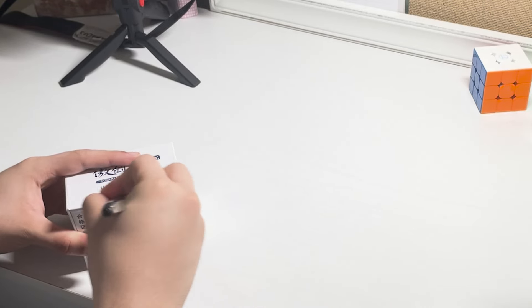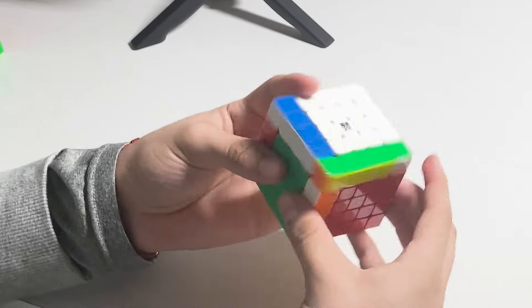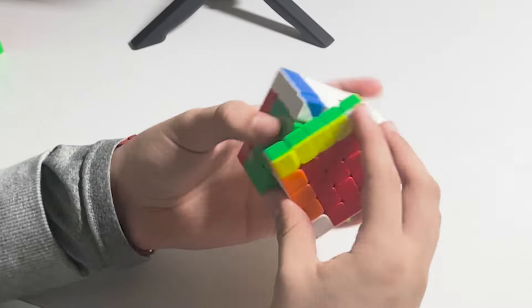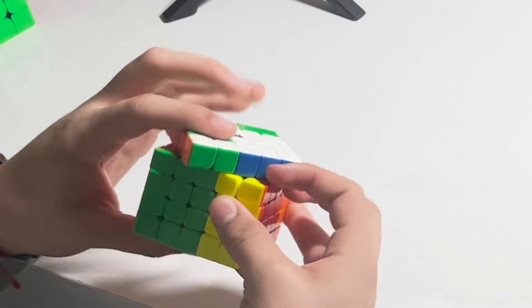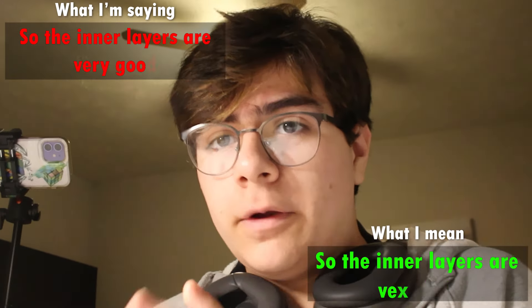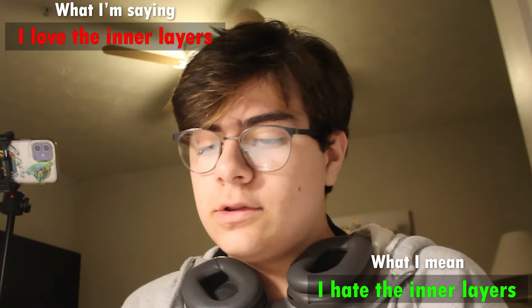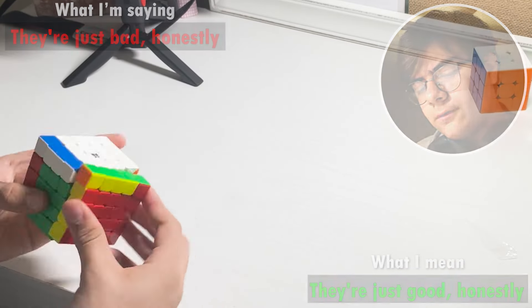So it comes with accessories, basic accessories, and then the cube. This is interesting. So the inner layers are very good, I love the inner layers, they're super fast and they don't lock up at all. The outer layers, they lock up so much and they're just bad honestly.